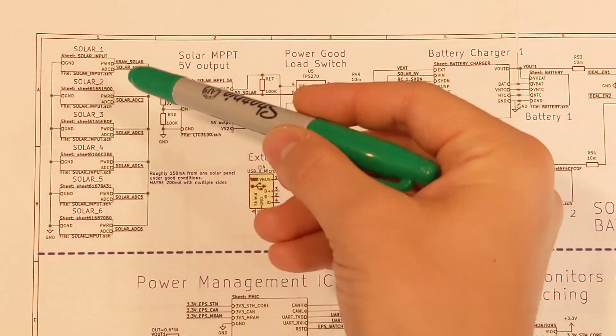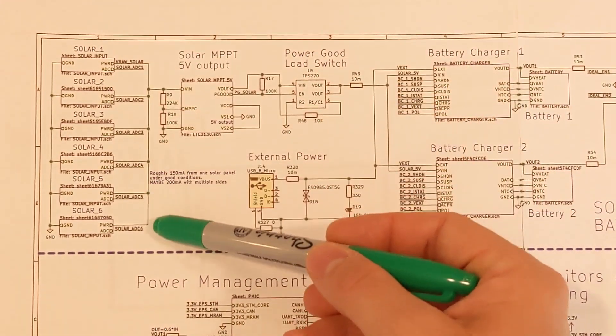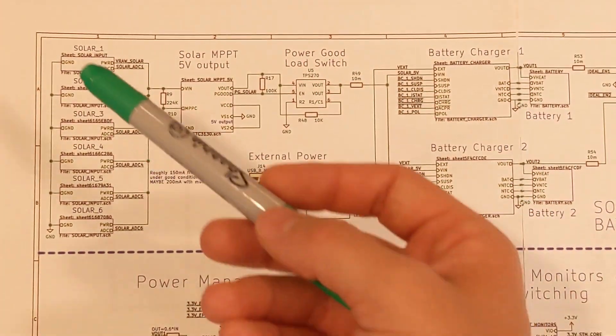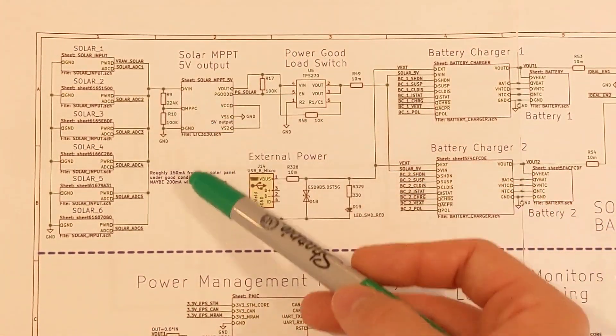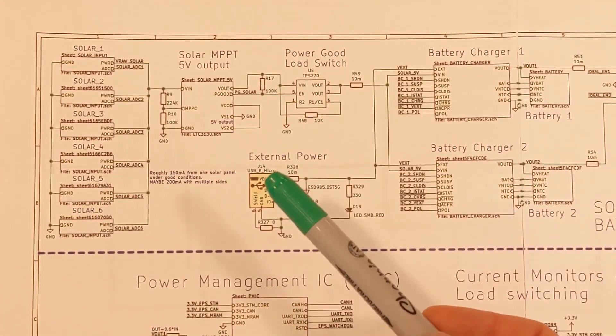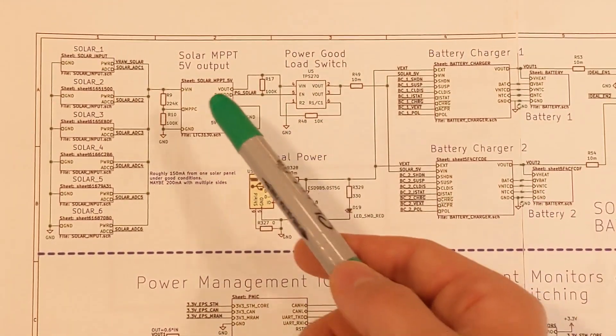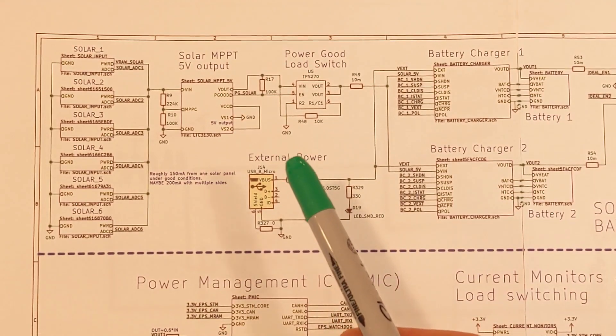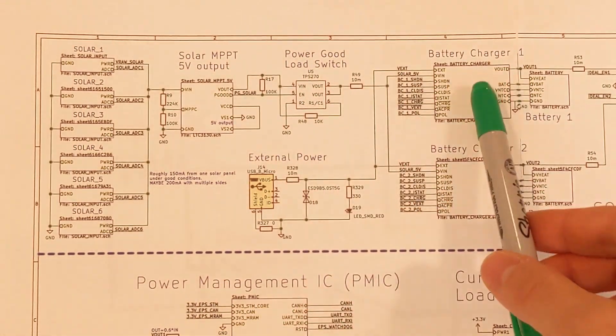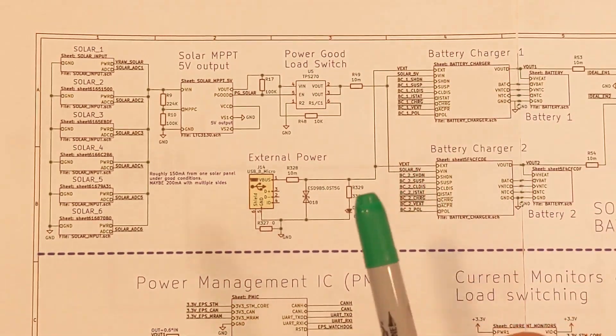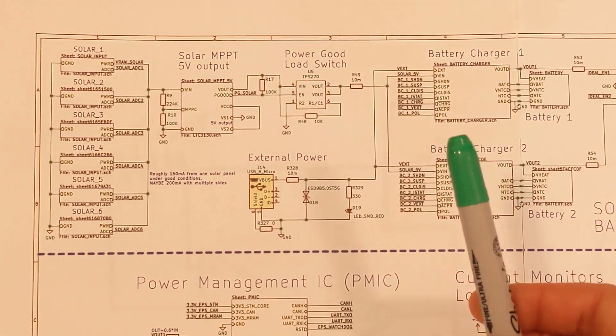Focusing in, you can see the solar inputs, and they are all connected together, as I discussed in a previous video. These are feeding into a maximum power point tracker, which outputs 5 volts. This 5 volt output goes into a power good load switch, which will only turn on if the power good signal from this maximum power point tracker is indicated. That way, these battery chargers only ever see 5 volts and not some intermediary voltage, which could cause some glitches.